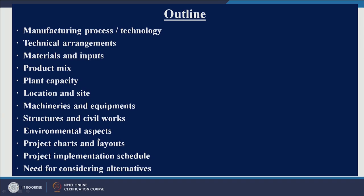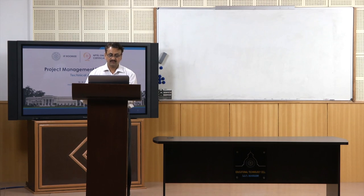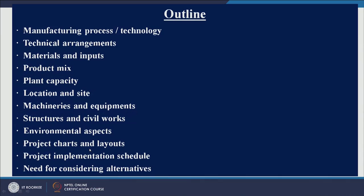Environmental aspects need to be looked at before starting a project, because you need to come up with an effluent plant — how you are disposing of wastages coming out of processes. Then you have project charts and layouts, project implementation schedule, and the need for considering alternatives. These are the topics we are going to cover in today's session.